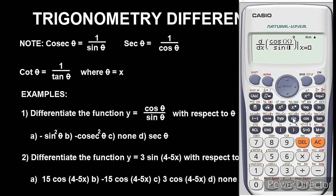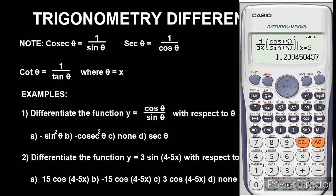So the function entered is cos(x) over sin(x), with brackets. Then come down to this place and enter 2, which was stored. Press the equals button and we get approximately 1.209. We are now going to evaluate each of the options.